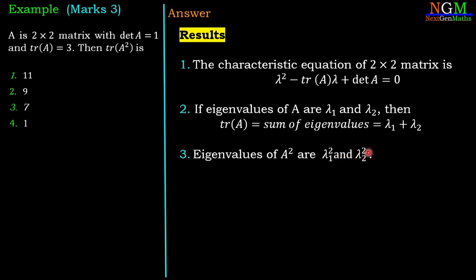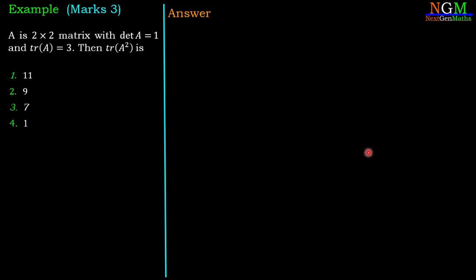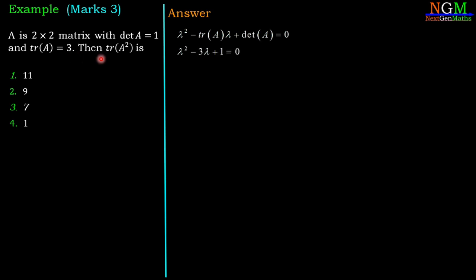We are going to use these three results to find the value of trace of A². We start with the characteristic equation: λ² − trace(A)·λ + det(A) = 0. Substituting det(A) = 1 and trace(A) = 3, we get the quadratic equation λ² − 3λ + 1 = 0.